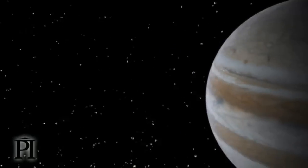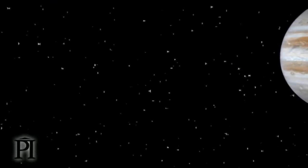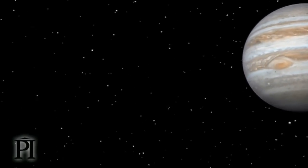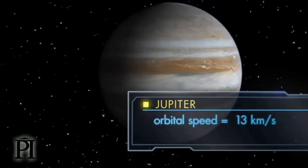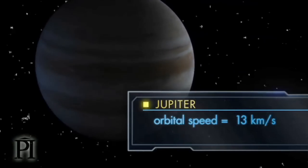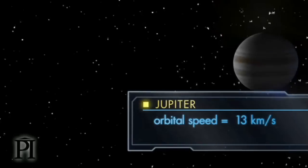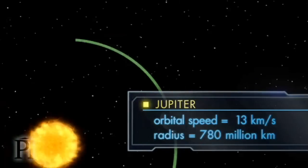We can calculate the mass of the sun by measuring the orbital speed and radius of one of the planets, such as Jupiter. Jupiter orbits the sun at 13 kilometers per second. The shape of Jupiter's orbit is essentially circular, with a radius of 780 million kilometers.